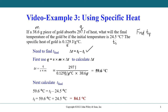So first of all let's plug in the values that we have into our heat equation. The heat equation we can use is Q equals S times M times delta T, and we can rearrange for delta T as shown. We can plug in the heat value at 297 joules and we have the specific heat and the mass.